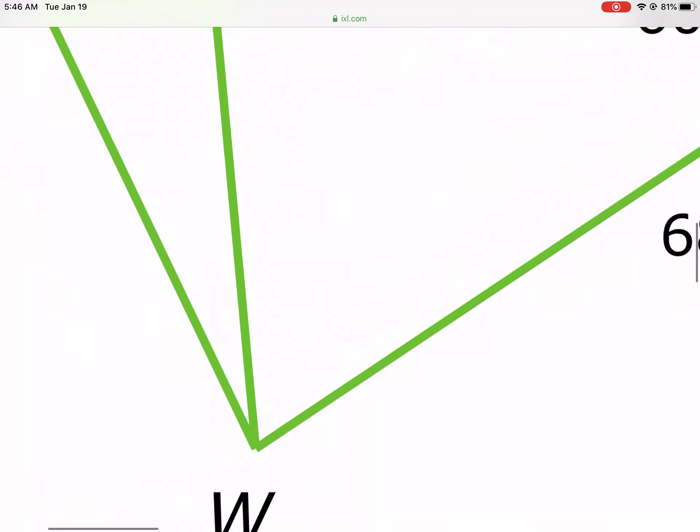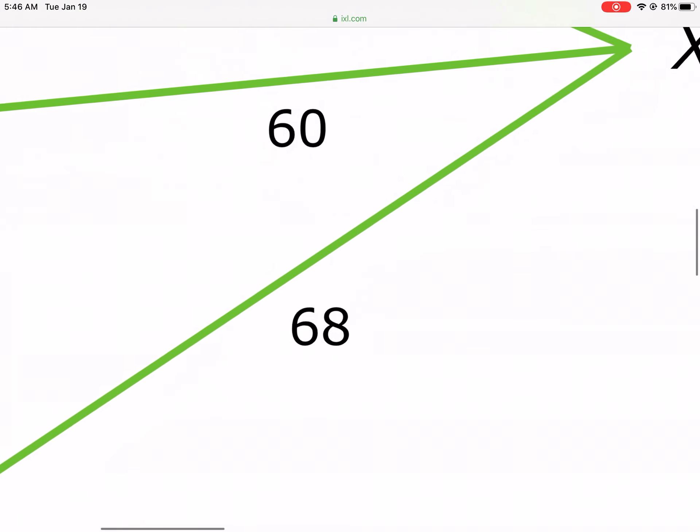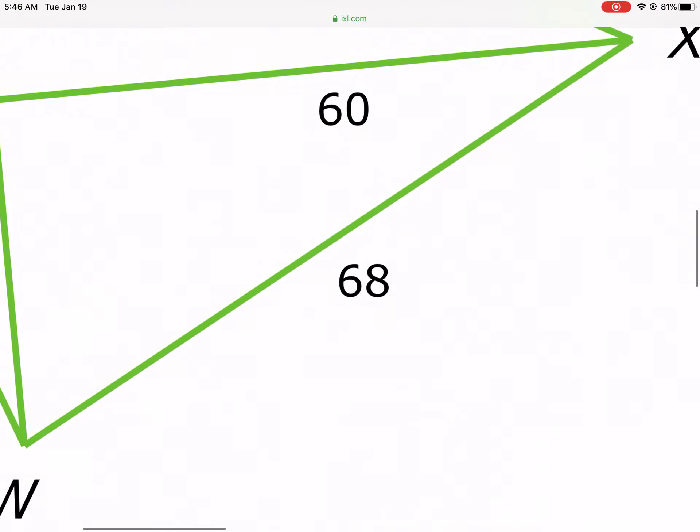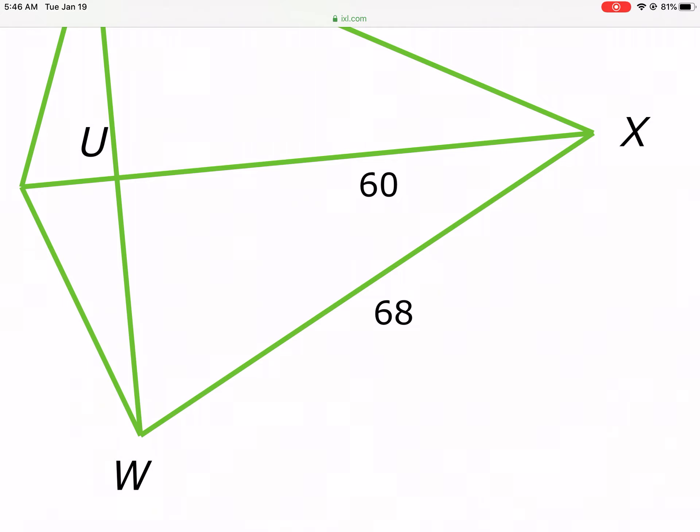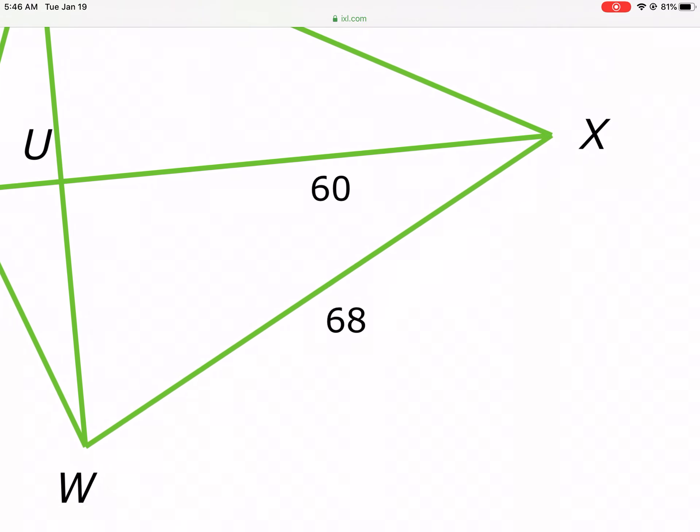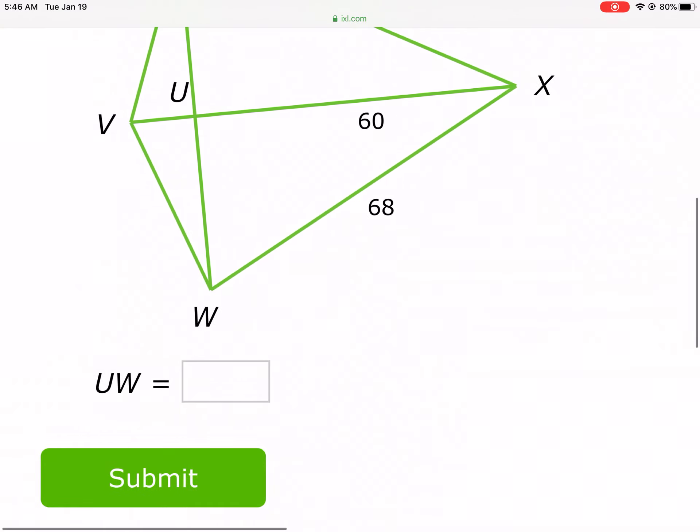So simply, we have to do A squared plus B squared equals C squared. A squared is our missing length, UW. B squared is 60, or 60 squared. And then VX is our hypotenuse, or C squared, 68 squared. So we're going to do 68 squared equals 60 squared plus UW, or X squared, or A squared, however you want to say it. So essentially, I need to do our C squared minus our B squared, which is 60 squared, and then take the square root of that. And once I do all that, I get 32.